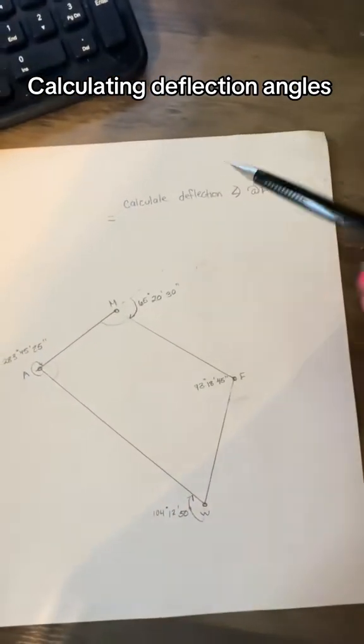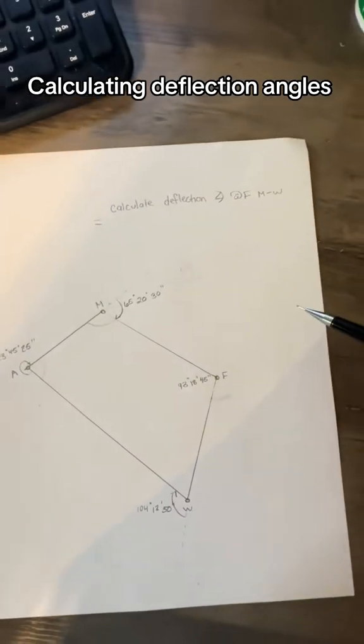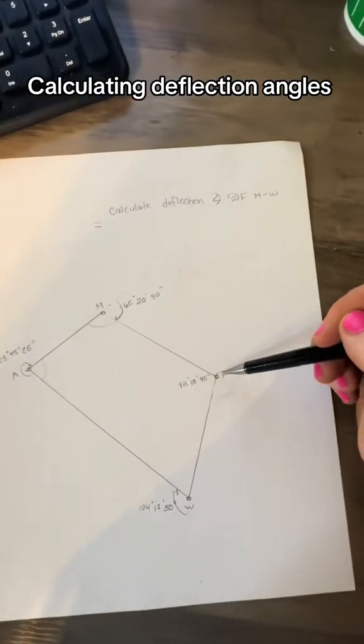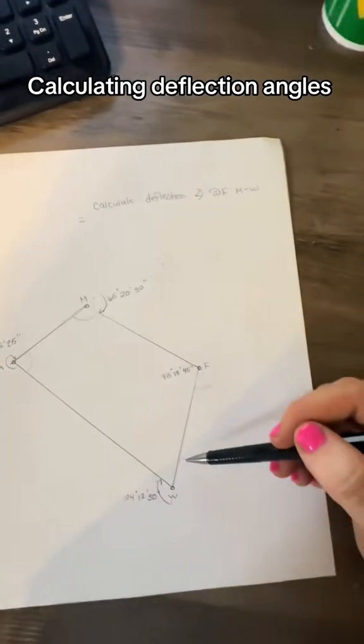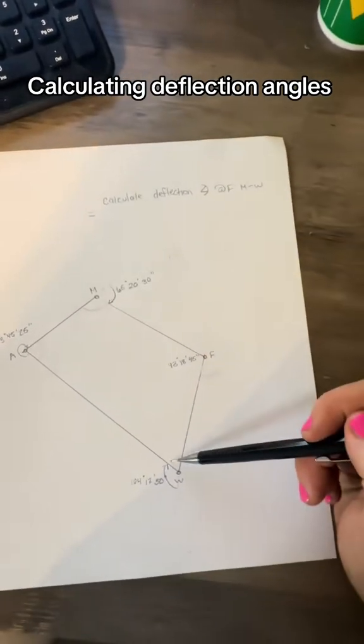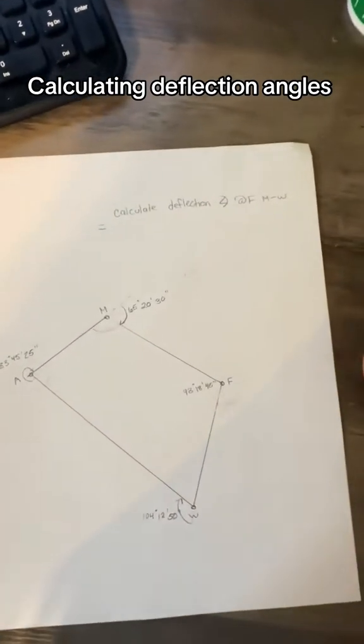But let's say somebody asks you to calculate the deflection angle. If you are sitting at F, M to W, so you're back setting M, fore setting W. What exactly is it asking you?